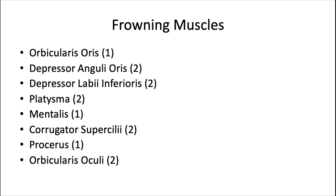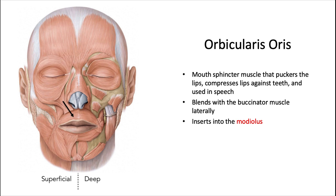Next we have the frowning muscles. Note that the orbicularis oculi is included here even though it's also a smiling muscle — it's actually activated in both. There's also a lot of variation and debate about whether smiling or frowning requires more muscles, so just focus on recognizing these names and their general location and function. The orbicularis oris — not to be confused with the orbicularis oculi — is the mouth sphincter muscle that puckers the lip, compresses the lips against the teeth, and is used in speech. It blends with the buccinator muscle laterally and inserts into the modiolus.